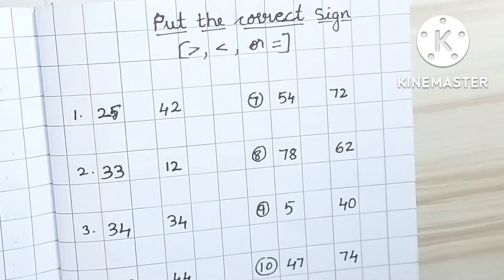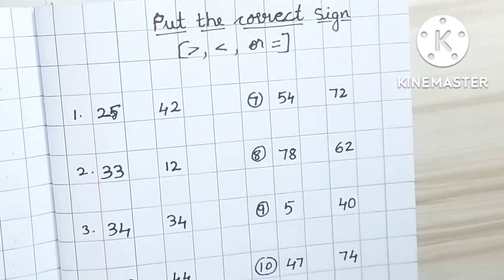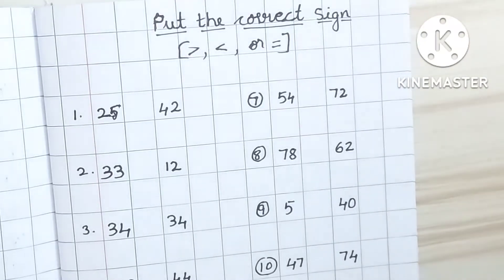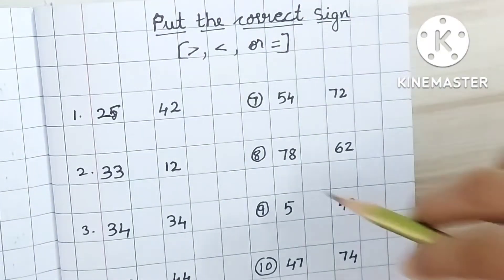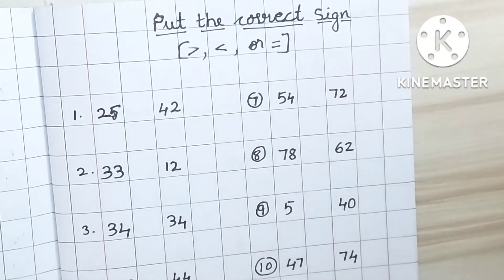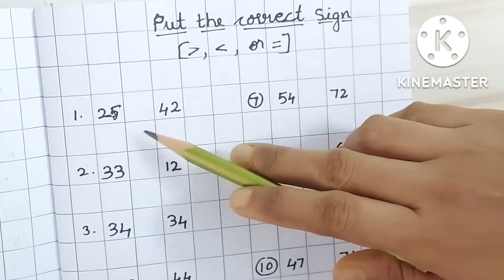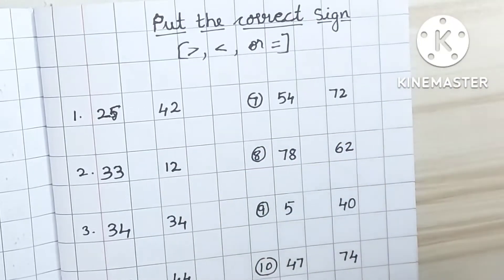Namaste. In revision with Vrithi, we are going to write a correct sign. Shall we start, Vrithi? Yes, Mamma. Put the correct sign in here. Greater than or less than or equal to. Okay.